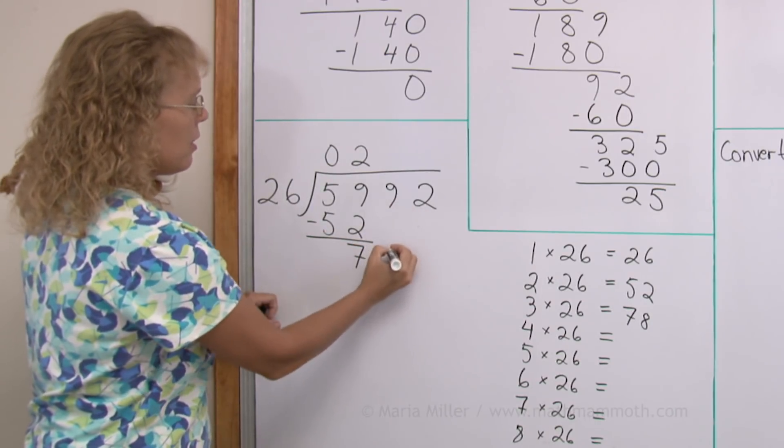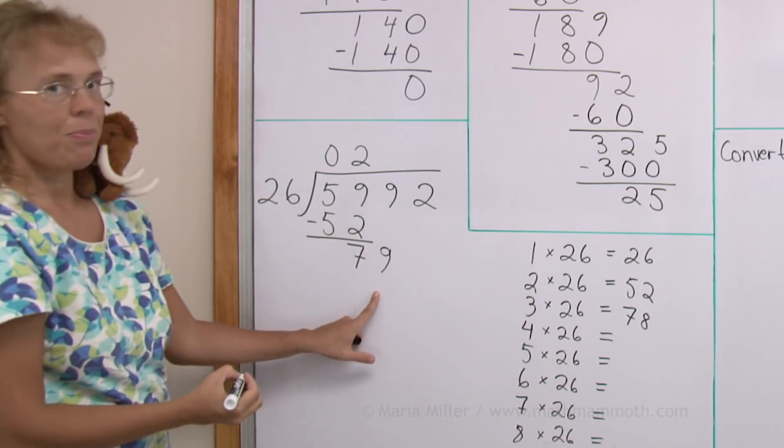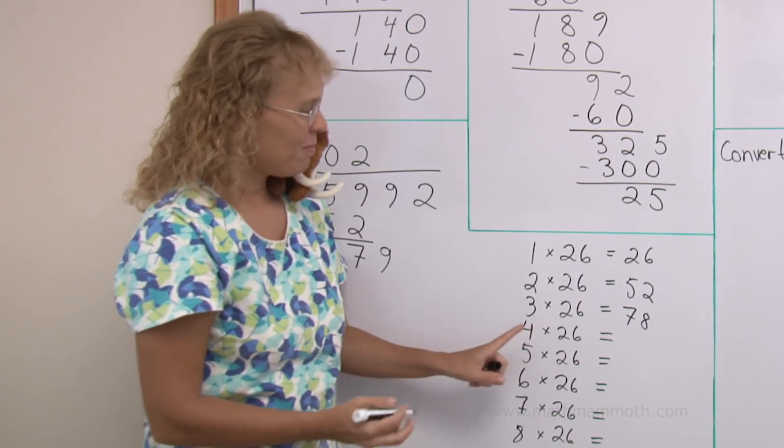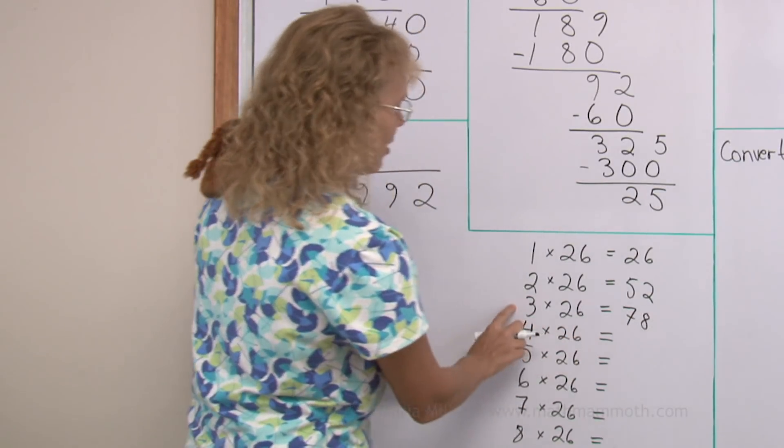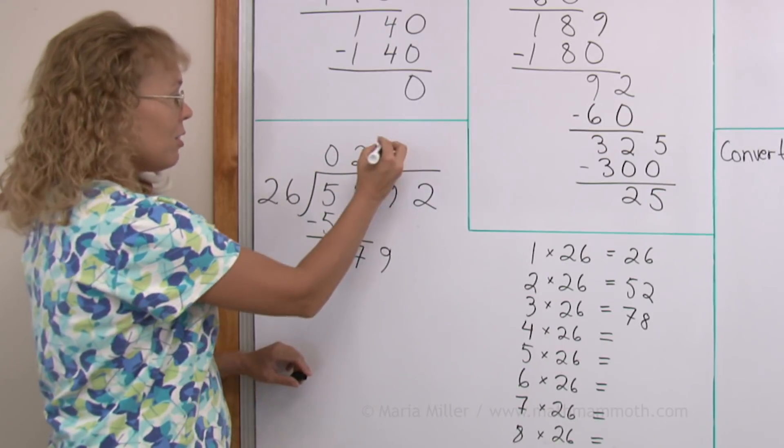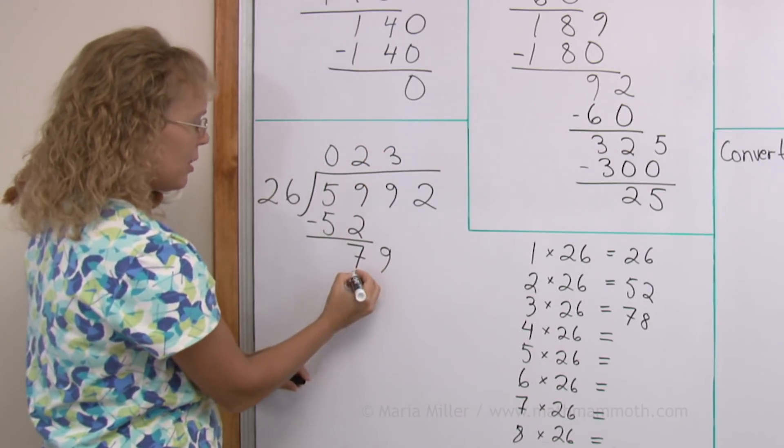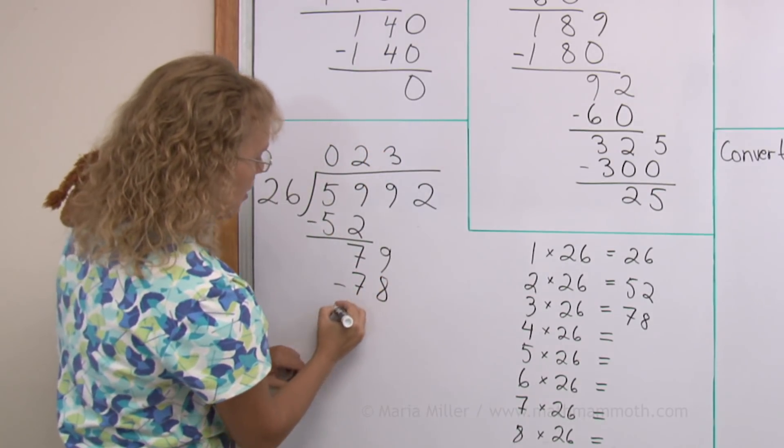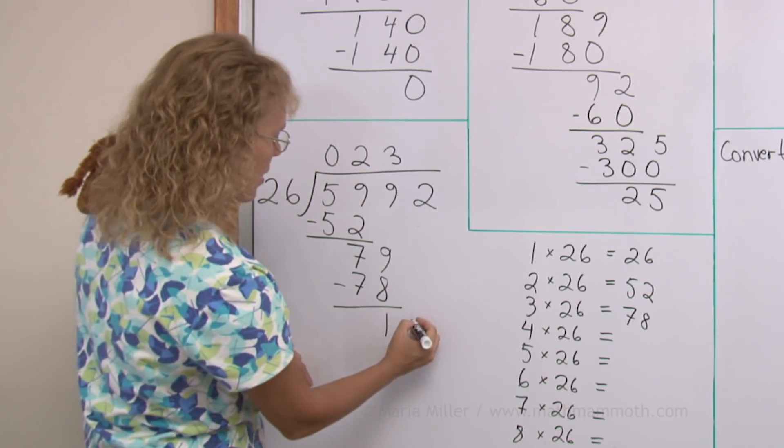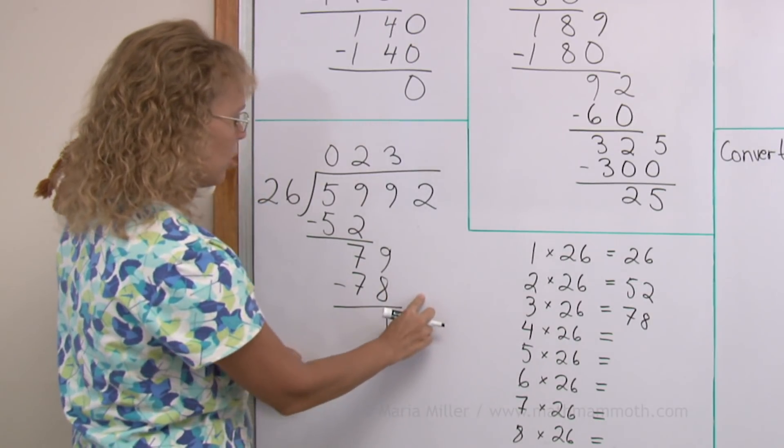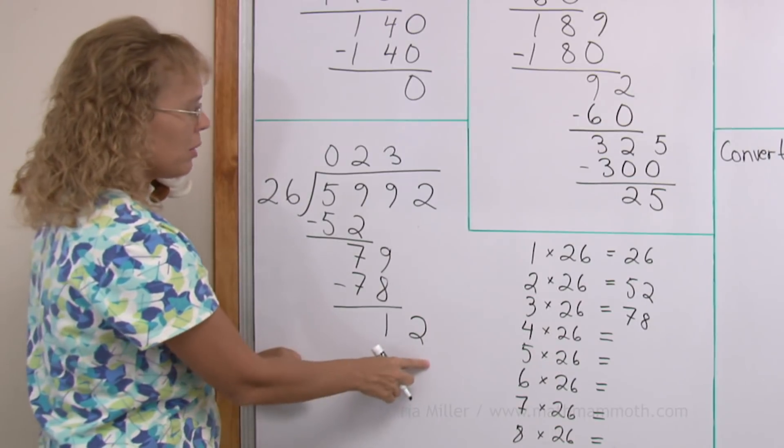Now, we get 7. And then 9. 79. Okay. Over here, in my list. 78. 3 times 26 is 78. So, it goes 3 times. 3 times 26 is 78. Subtract. And 1. And then drop down this 2. And 26 goes into 12.